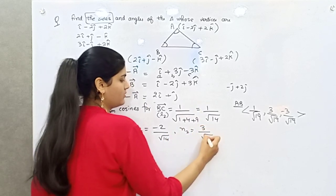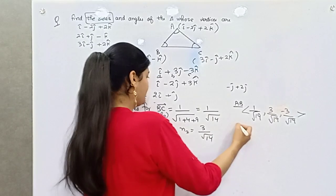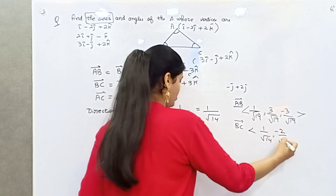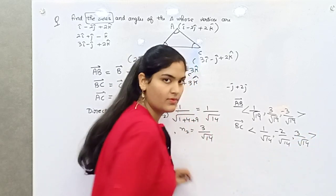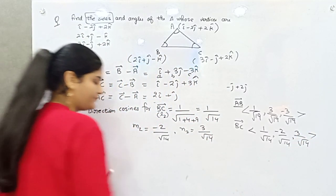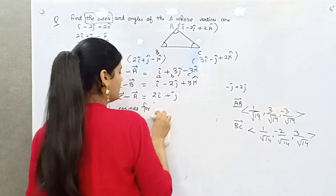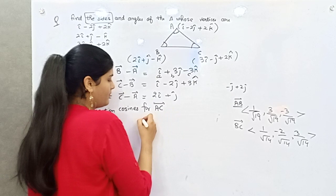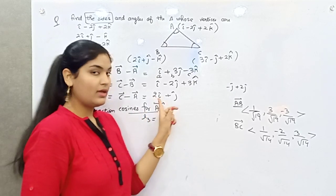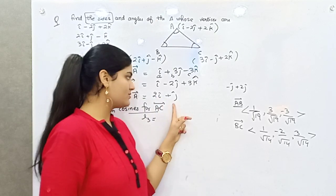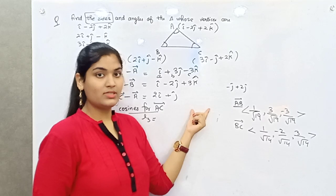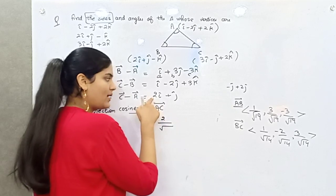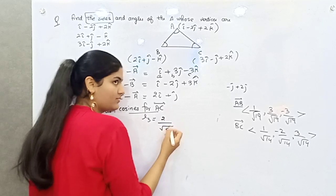M2 = −2/√14 and N2 = 3/√14. So for BC, the direction cosines are 1/√14, −2/√14, and 3/√14. Now for AC, L3: the coefficient of i is 2, j is 1, and k is not present so we consider 0. The magnitude is √(2² + 1² + 0²) = √5.